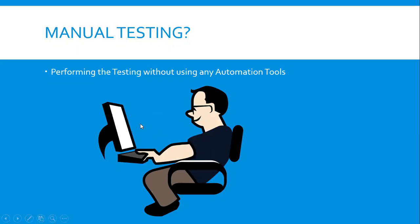If the application is logging in, then he will pass the test. If the application is not logging in even after he manually enters valid credentials and clicks on the login button, then he will fail the test and report a bug. This is how manual testing is done in real time. Here we don't use any tools, but the person will directly perform the testing.